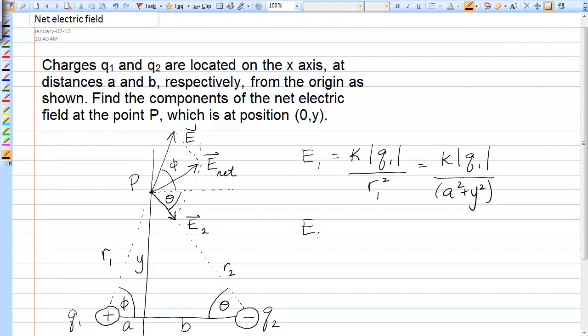Okay, similarly, E2, the magnitude, is K magnitude of Q2 over R2 squared, so it's K magnitude of Q2. In this case, it's B squared plus Y squared.